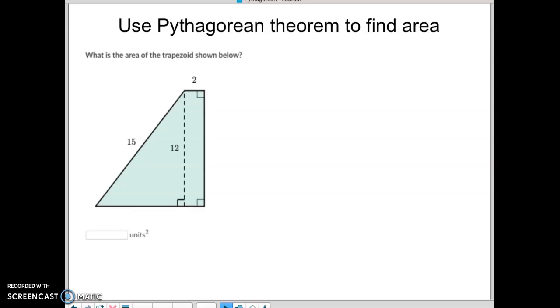Hey Math 8 students, so this next Khan Academy is called using the Pythagorean Theorem to find the area. What we need to do on this first shape here is break this down into a right triangle here and then a rectangle. So we just simply need to find the area of both of those and add them together.